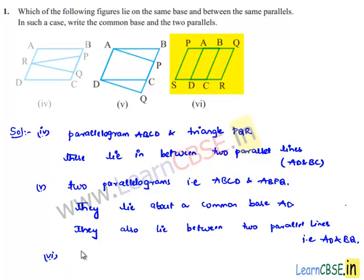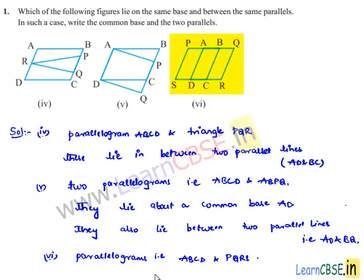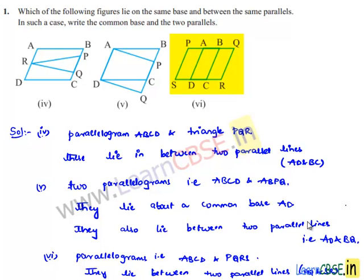Moving on to the sixth bit — we have parallelogram ABCD and parallelogram PQRS. They lie between two parallel lines PQ and SR, but they do not have any common base.